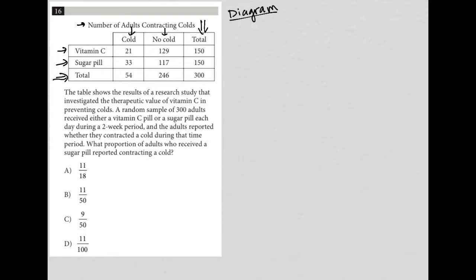So the question goes on to say the table shows the results of a research study that investigated the therapeutic value of vitamin C in preventing colds. A random sample of 300 adults received either a vitamin C pill or a sugar pill. So I'm going to write that down. So 300 will split up into vitamin C or sugar pill.